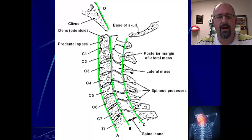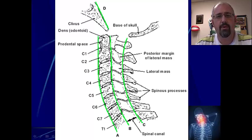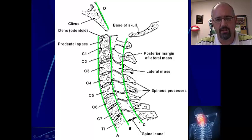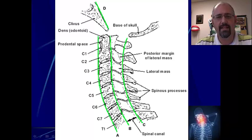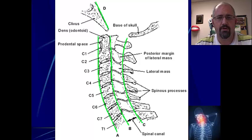Just to give us an idea in diagrammatic form — remember the top up here, C1, C2 — we're going to talk about this junction in particular and how it is created with this special little peg of bone called the odontoid peg. This upper cervical region is very specialized and provides for specialist movements. The rest of the cervical spine, C3 right the way down through to T1, has a much more uniform style of vertebrae and a much more uniform style of motion.